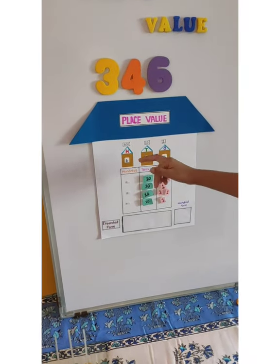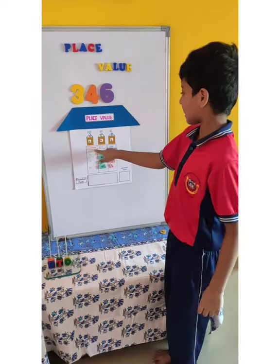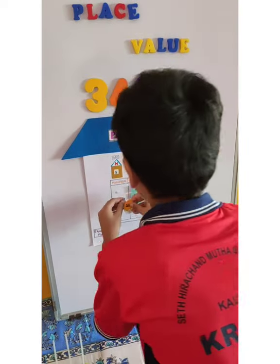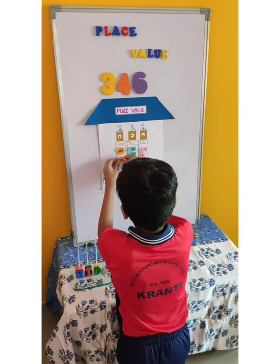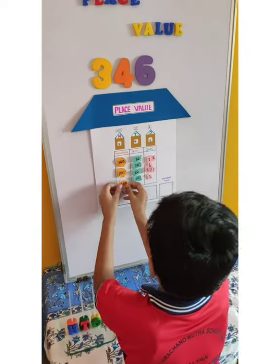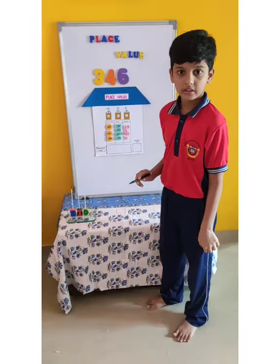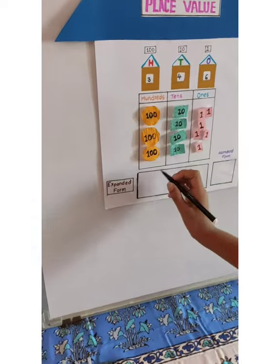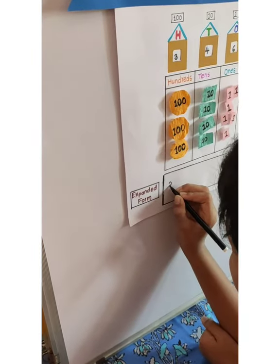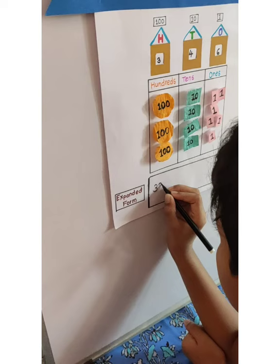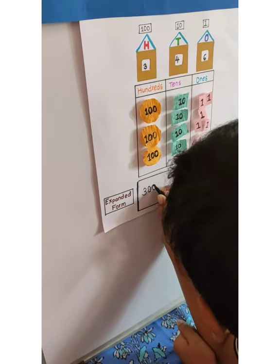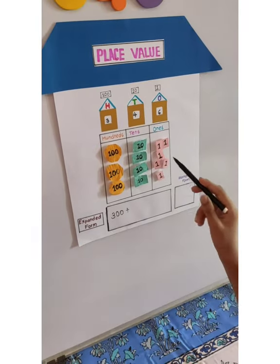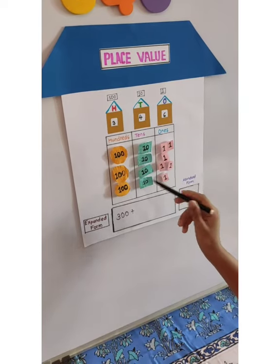Moving to the hundreds place — the next place is the 100s place. This 100 for 3 times. Now let's see the expanded form: 100, 200, and 300 — write 300. Now the tens place: 10, 20, 30, and 40.